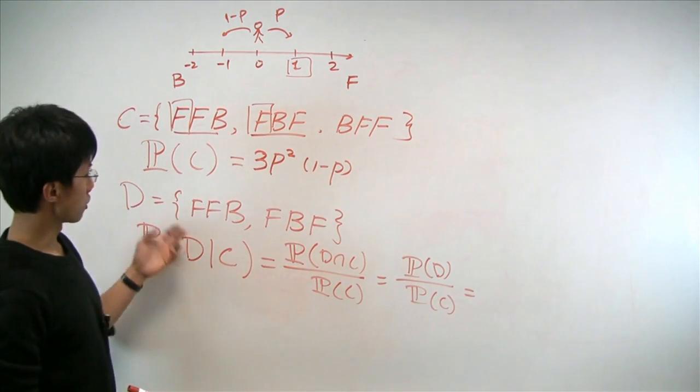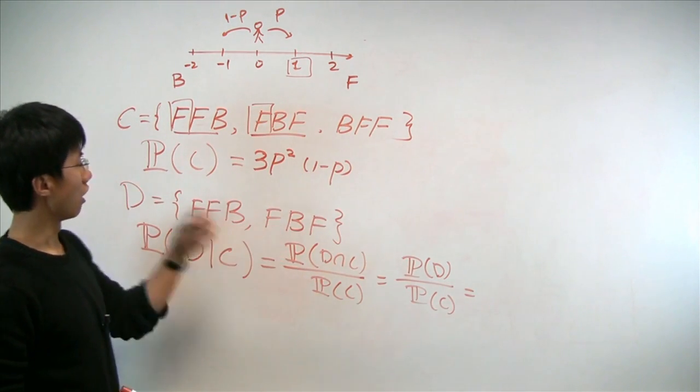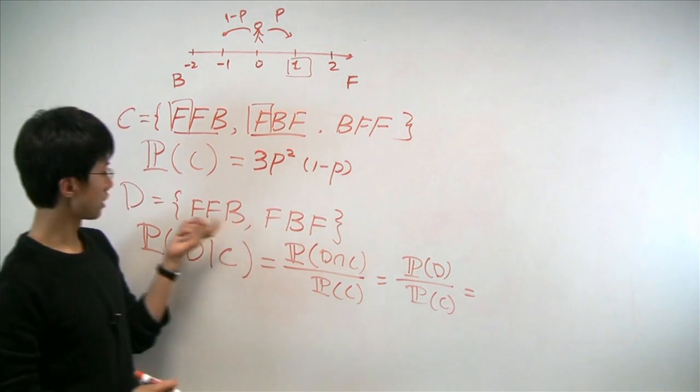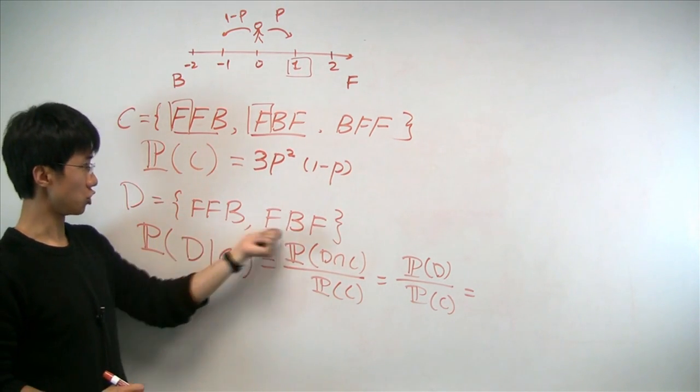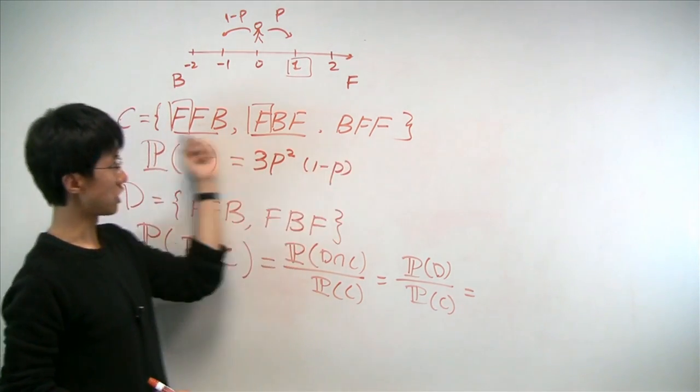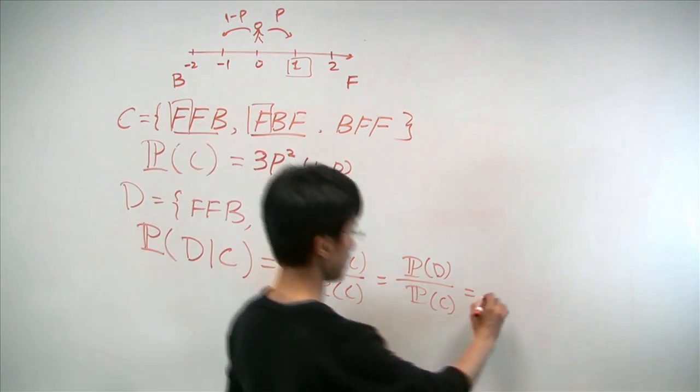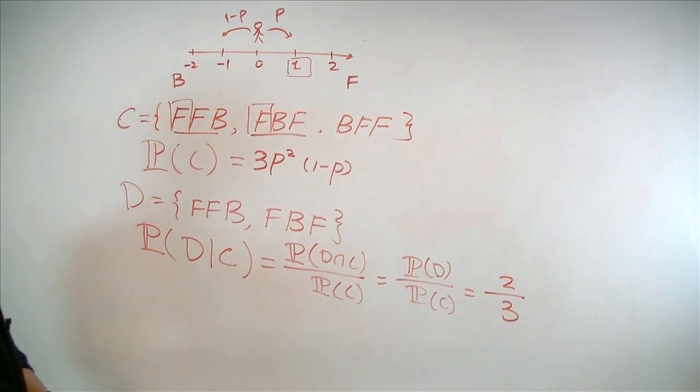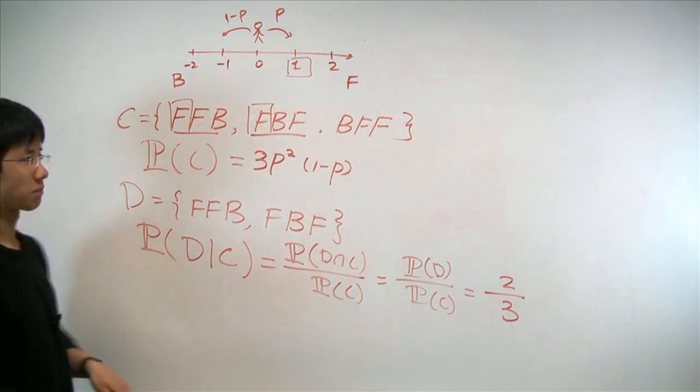Again, because all samples here have the same probability, all we need to do is to count the number of samples here, which is 2, and divide by the number of samples here, which is 3. So we end up with 2 over 3. And that concludes the problem. See you next time.